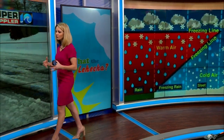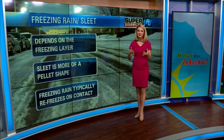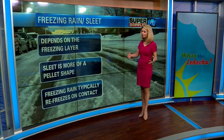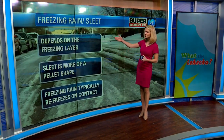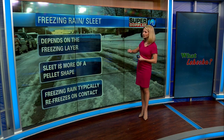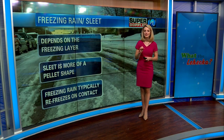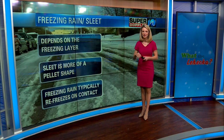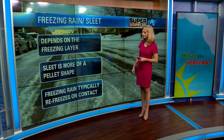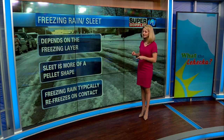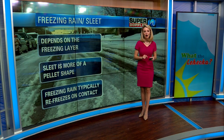So there are differences, but it's hard to tell exactly what's happening, and really you could have all of them across an entire region — it depends on the freezing layer. Sleet is more of that pellet shape that kind of bounces off your windows, while freezing rain typically refreezes on contact with the surface.